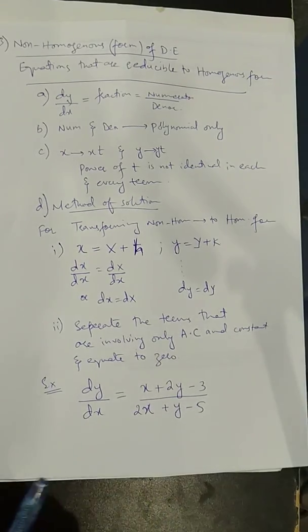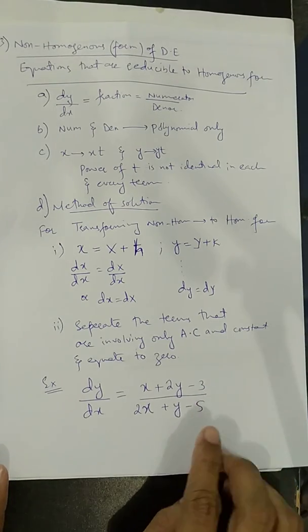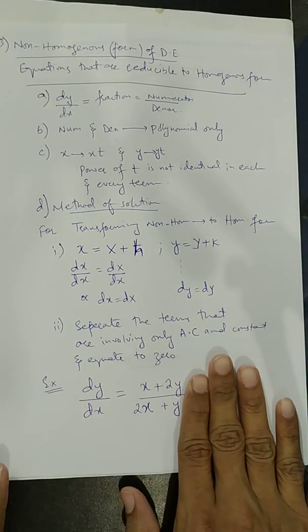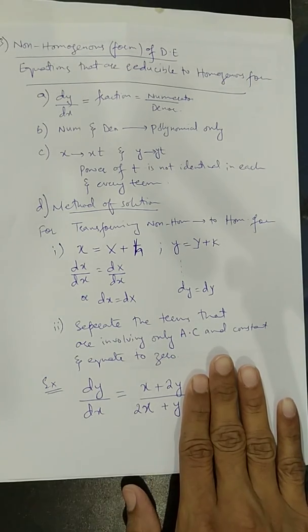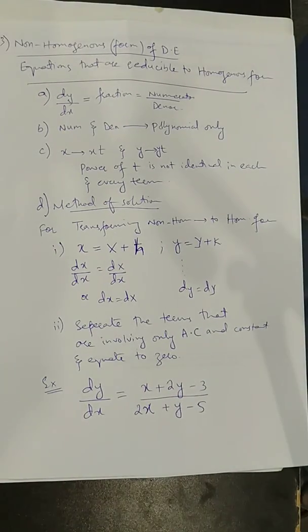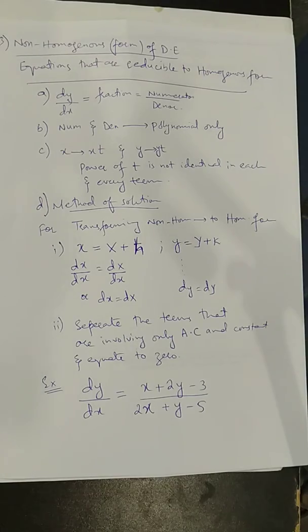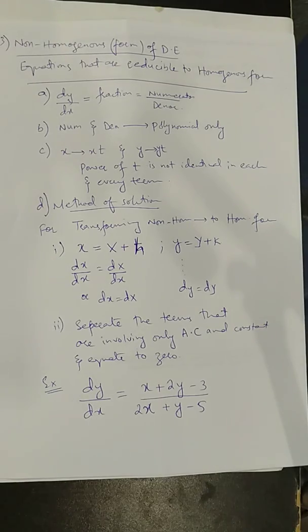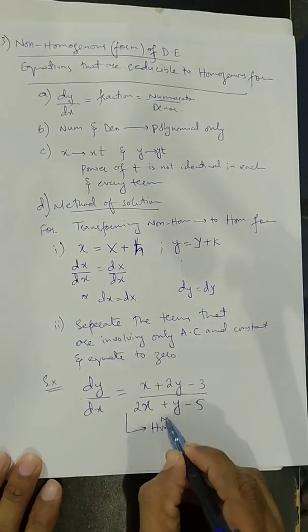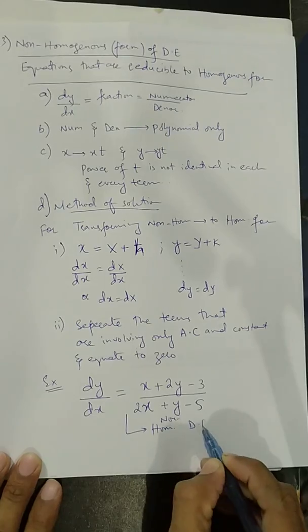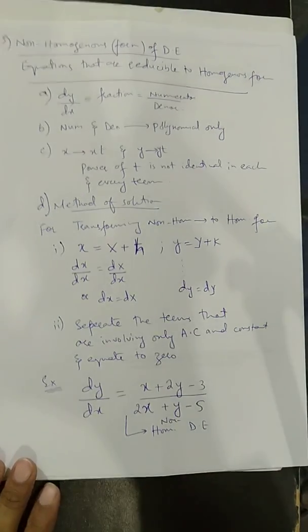If the constants −3 and −5 were not present, this equation would be a homogeneous differential equation. But because −3 and −5 are present, when we substitute x by xt and y by yt the power of t is not the same in each and every term. So we declare this a non-homogeneous form of a differential equation.